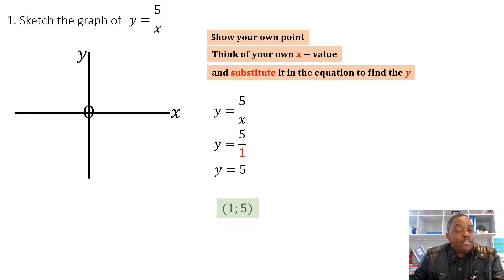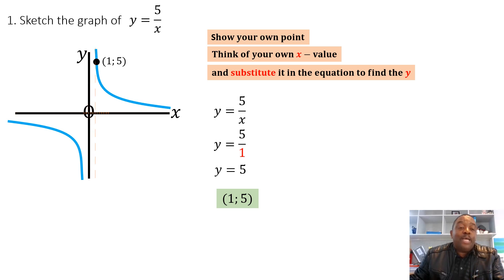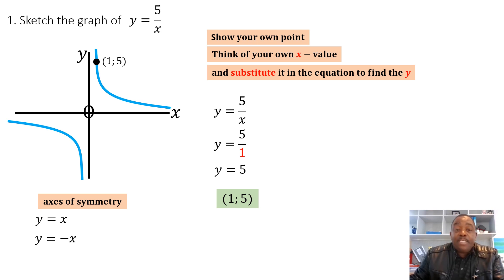Substituting x = 1 gives y = 5/1 = 5, so the point is (1, 5). Since the graph hasn't shifted, the asymptotes are still on top of the x and y axes, so there's no need to show them separately. The axes of symmetry y = x and y = -x also remain unchanged, and if asked, their equations are simply y = x and y = -x.